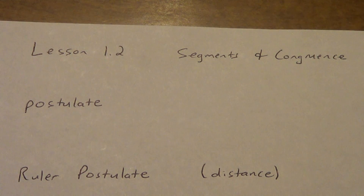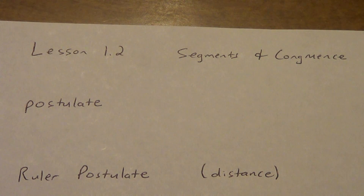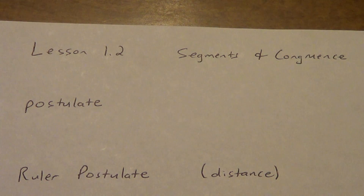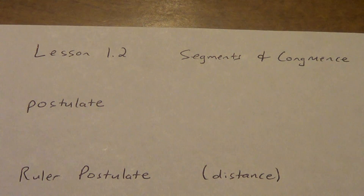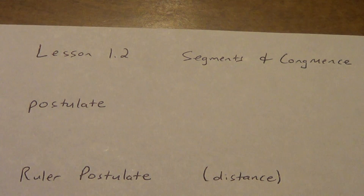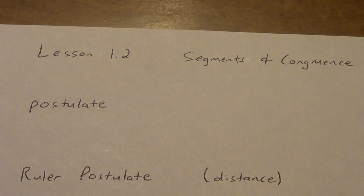We always start with postulates, and later on top of those, we're going to build some theorems. We aren't going to hit any theorems today, though. Alright, first one: Ruler Postulate. Basically, this is talking about distance.